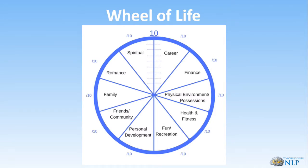Welcome back. Let's talk about the wheel of coaching. We're on page 37 in your manual. As you look at this wheel of life, you'll notice that we've got 10 sections — career, finance, physical environment, etc. The idea is that the client measures themselves on a scale of zero to ten, so how happy are they in each area of their life. As an example, they might give themselves a five out of ten for career, a six out of ten for finance, a nine out of ten for physical environment.